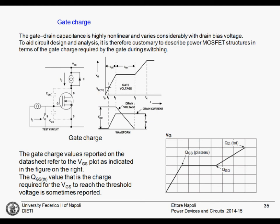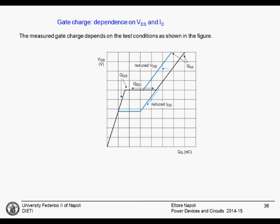The charge needed to transfer is fixed regardless of gate resistance — a reduced gate resistance will transfer this charge faster or slower, but the total charge remains the same. The gate charge plot does depend on test conditions, so it is important to check which conditions are used on the datasheet. For a given drain current, the initial region has a constant slope, but the plateau position depends on the current.